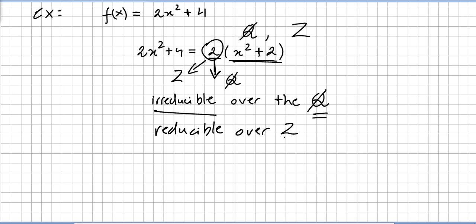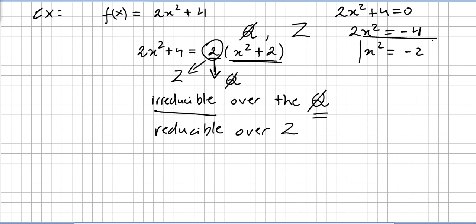And the other fact is that 2x² + 4 equals 2(x² + 2), which has no real zero — neither over the rationals nor over the integers. Same exact example: what about the rationals and the complex numbers?